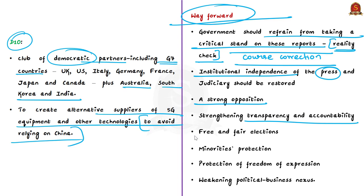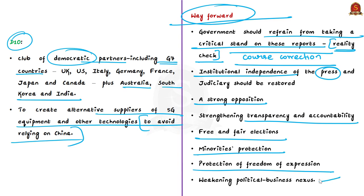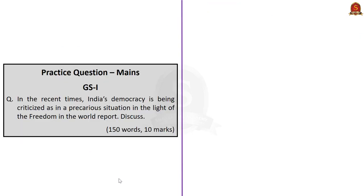For example, bringing back the RTI Act in its original format as it existed prior to the RTI Amendment Act of 2019, and making the Central Information Commissioner and other Information Commissioners on par with members of the Election Commission, can improve India's image. There must be free and fair elections combined with protection for minorities and those in disadvantaged situations, protection of freedom of expression, and improvement in press independence. Weakening the political-business nexus will also make India a beacon of democracy, as such nexus channels governance to benefit a few rather than the many, and growth does not percolate to most people.